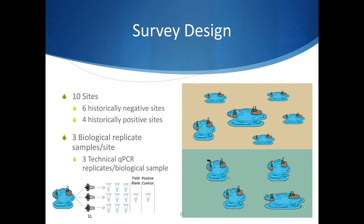At each of the 10 sites, we sampled using the Smith-Root ANDI system to collect three biological replicate samples. For each sample, we filtered one liter of water using one micron filter pore size. DNA extractions were performed on-site using the Biomem M1 sample prep kit, and qPCR analyses were also performed on-site using two Biomem M2-3 thermocyclers. Three qPCR technical replicates were prepared for each of the biological replicate samples for a total of nine qPCR sample tests per vernal pool. No template controls (NTCs) and positive controls using synthetic target DNA were run alongside the samples to test for contamination and to ensure all components of the qPCR analyses were functional.